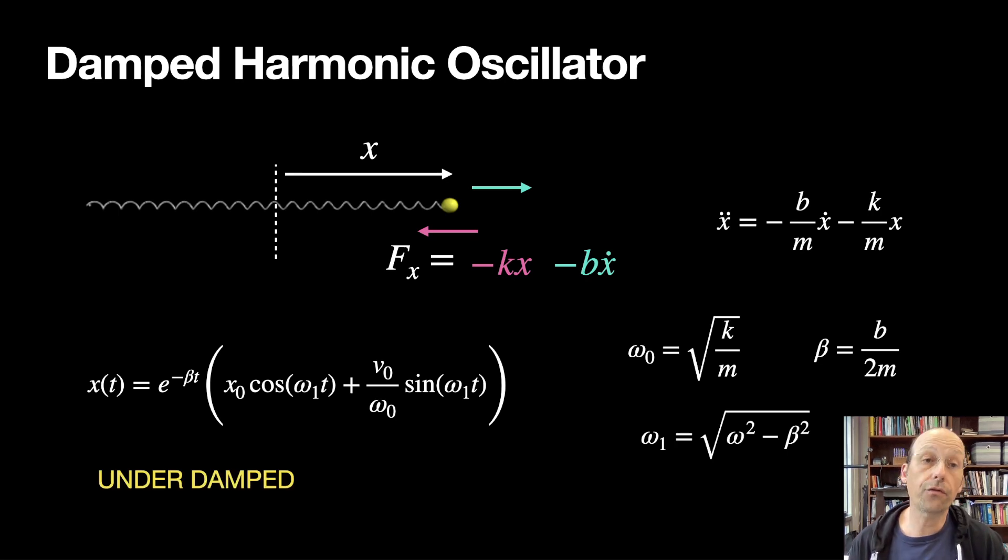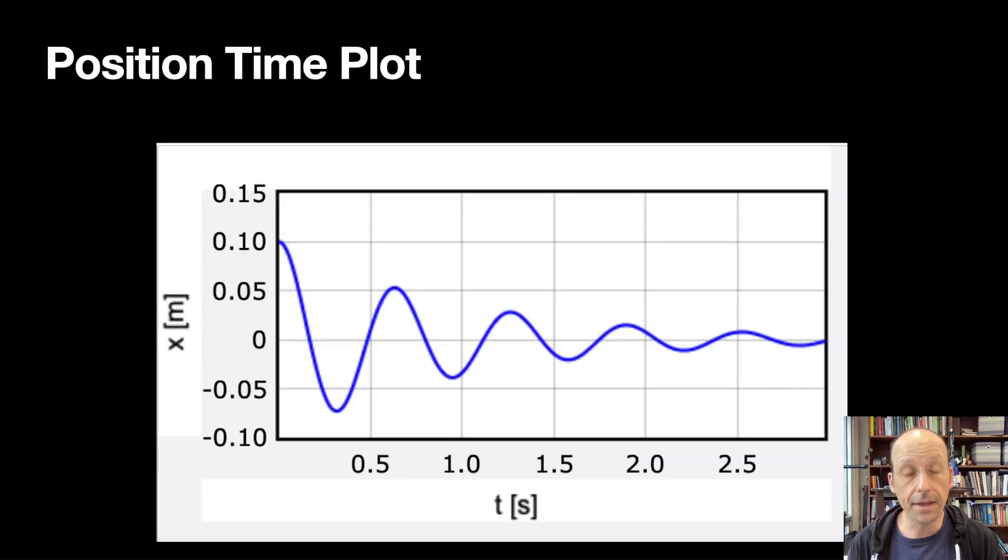So if I plot that as position versus time, I get this position versus time plot. And you can see that it decays down. I have a great video on making this plot with the two exponential curves lining it down. But that's in the playlist if you want to watch it. You should watch that. I think it's really good.